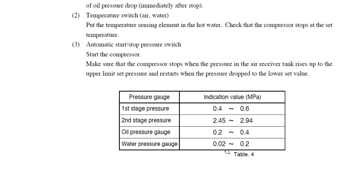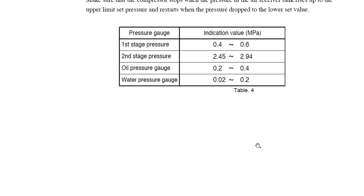This table shows us the indication values in megapascals. For the first stage: 4 bars to 6 bars. For the second stage: 24.5 bars to 29.4 bars. Oil pressure must be from 2 to 4, and the water pressure gauge should show from 0.02 to 0.2 megapascals.